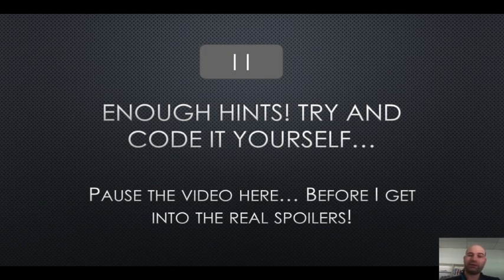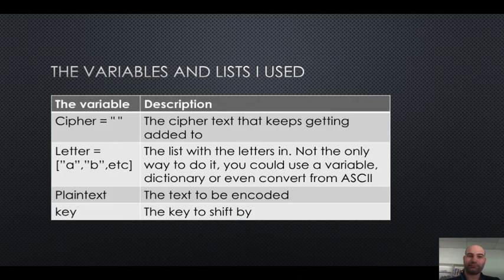Okay. But if you can't, here are the real spoilers. So, these are the variables and lists I used. I used cipher, and that started off blank and got bigger and bigger as we encoded it. Then we had letter, which was a list. You don't have to do it with a list.